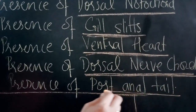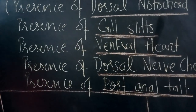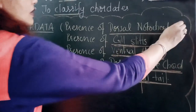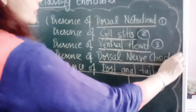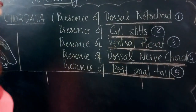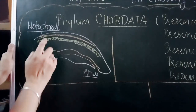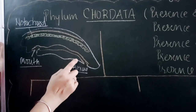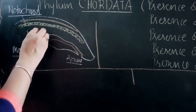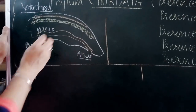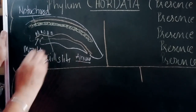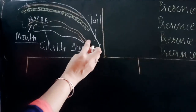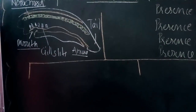Fifth, the presence of a post-anal tail — beyond the anus there is an extension of the body called the post-anal tail. So if these five characters are present in any organism, that organism is said to be a chordate. Quick revision: the presence of the dorsal notochord, the dorsal nerve chord, gill slits (structures present in the pharyngeal region), a ventral heart, and a post-anal tail. If an extension beyond the anus is present, the organism is said to be a chordate.